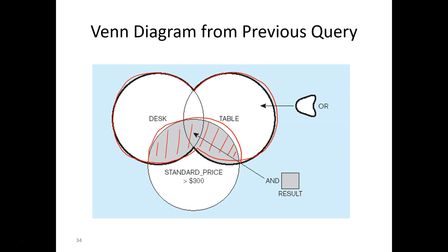Only the shaded area — the part that intersects with the other two circles — will be included in the result, because this is an AND statement. Now let's revisit this statement. What if we do not have the parentheses? If there are no parentheses, then the SQL statement is going to process the AND boolean operator first and OR next.